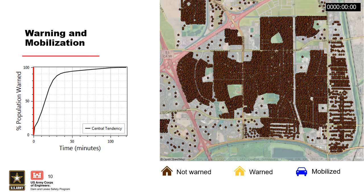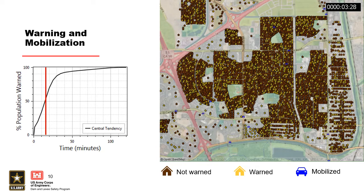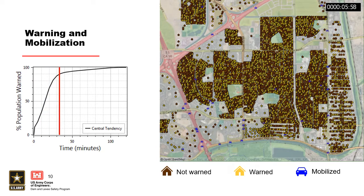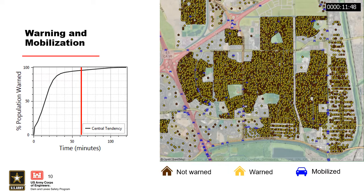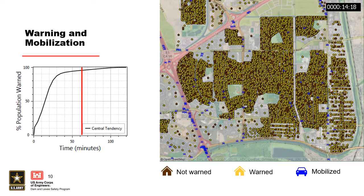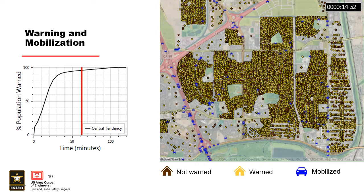Here's a visual of what that looks like — this animation is directly out of LifeSIM. As it samples off the warning curve, when people receive a warning the house turns from brown to yellow. Once the people in that structure decide to take protective action and evacuate, they turn into a blue car and try to evacuate out. This is one iteration, so in the next iteration, warning dissemination may play out slightly differently — that structure that evacuated 178 minutes after might evacuate five minutes after the warning or not at all.